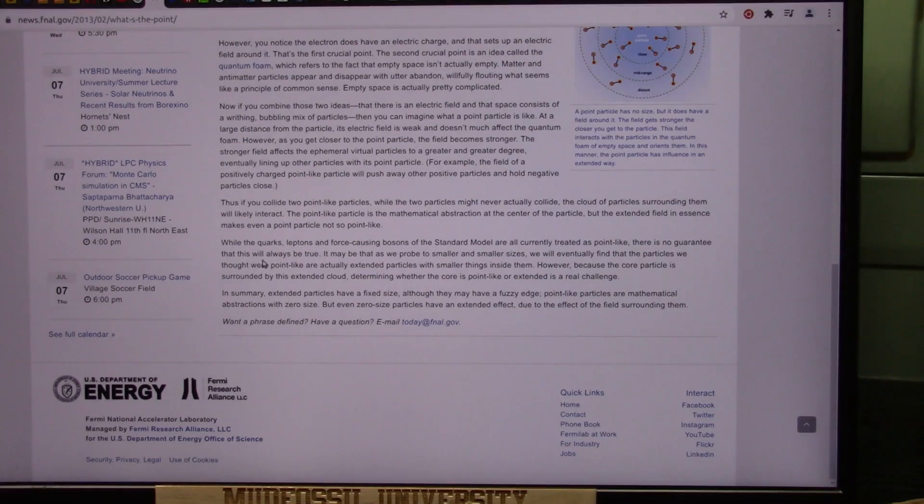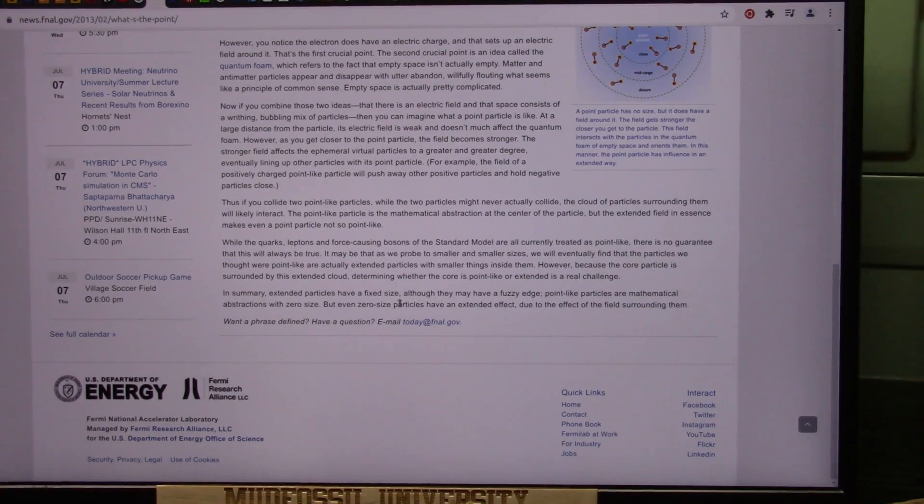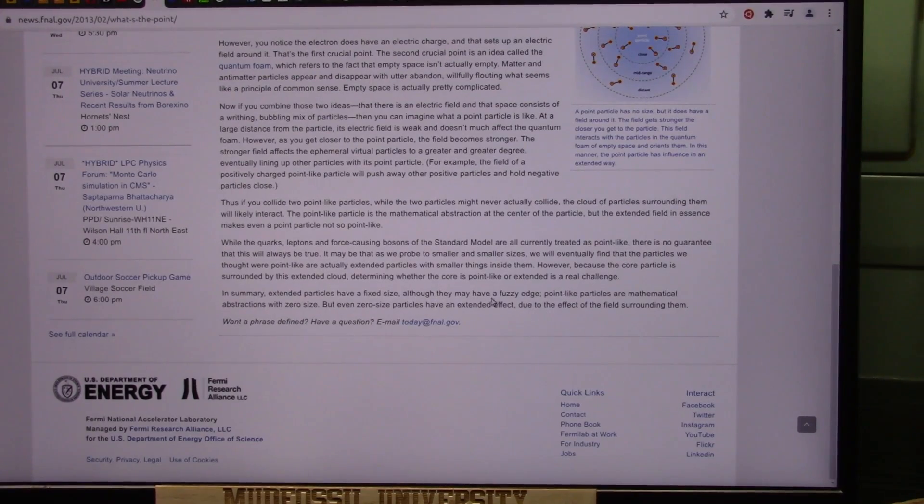Don Lincoln, again, he did both of these articles. It says, in summary, extended particles have a fixed size. That's the black one. And they may have a fuzzy edge, which is the little red-looking edge around.